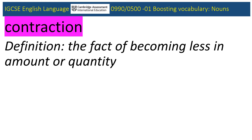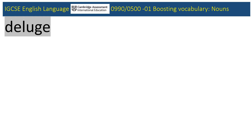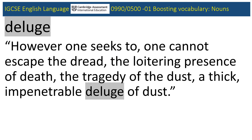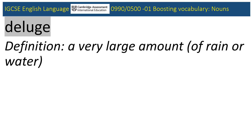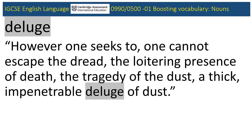Now for the fifth noun: deluge, from the June 2018 0500 paper. We are back in the bowels of the earth, underground in a coal mining pit. What might the quantity of dust be like down there? Define deluge. Note that this noun is typically used to describe torrential rain or a massive amount of water. Using it in this context makes it seem as though the dust is pouring down over the miners.